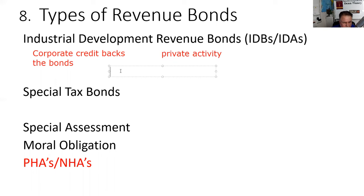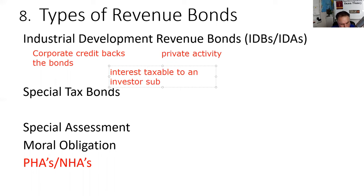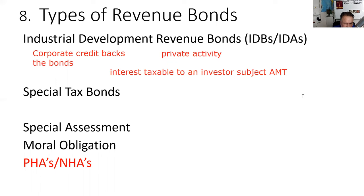Private activity bonds have tax implications: the interest is subject to the AMT — the alternative minimum tax. A suitability question: before recommending this, I'd ask if you're subject to the AMT. If you make around $200,000 and start taking deductions, the IRS says try it again using the alternative minimum tax method.